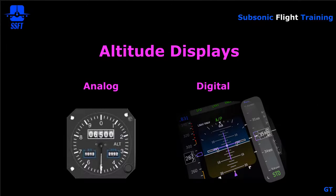Altitude displays in the past were on round-dial steam gauges. Today they're usually displayed on a glass display — most likely an LCD type. Older airplanes may have a CRT-type display. On the primary flight display, the altitude display indication is found on the right side of the PFD.